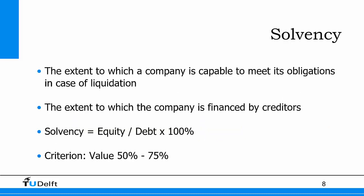The solvency ratio is basically the extent to which a company is capable of meeting its obligations in case of liquidation. It is also the extent to which a company is financed by creditors — an indicator of how much money of the owner is at risk compared to the money of a bank or another lending agency.